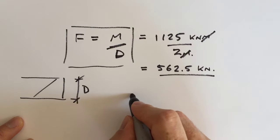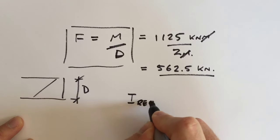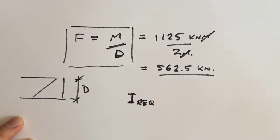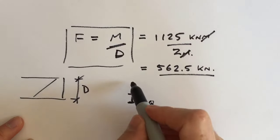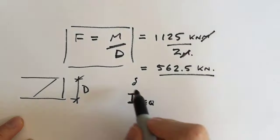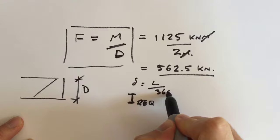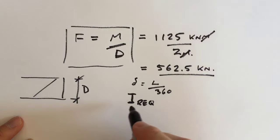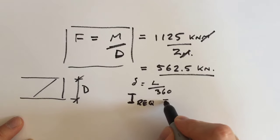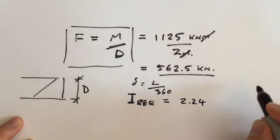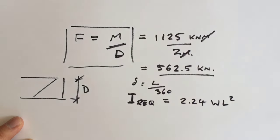The next thing we need to find out is our value of I required. The value of I is the value of stiffness. So we use this to limit the deflection, and we're going to limit that to span over 360. So I've got a little formula here that I want you to remember. I required is equal to 2.24 WL squared. Now, that's a formula that I've derived by inputting L over 360 and values such as Young's modulus. So it takes care of all the units.